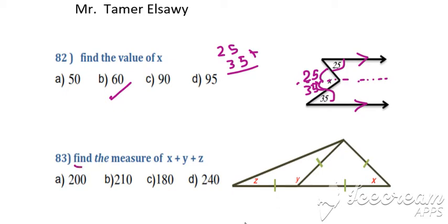Find the measure of x plus y plus z. This triangle has equal sides, called equilateral triangles. All the angles,